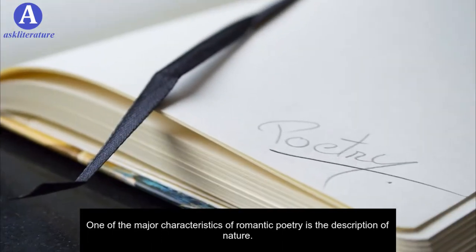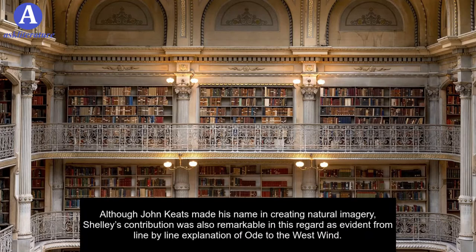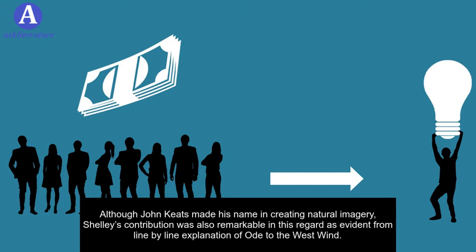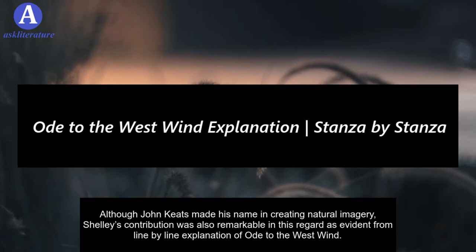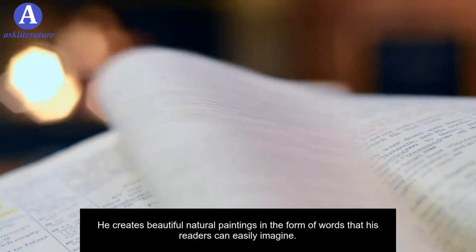One of the major characteristics of romantic poetry is the description of nature — it is the most important element of romantic poetry. Although John Keats made his name in creating natural imagery, Shelley's contribution was also remarkable in this regard, as evident from a line-by-line explanation of Ode to the West Wind. In his poem, Shelley with his imaginative powers creates a romantic sensation, crafting beautiful natural paintings in the form of words that his readers can easily imagine.